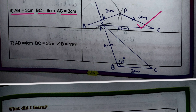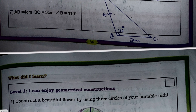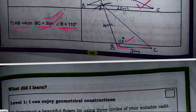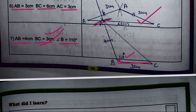Seventh example: AB = 4 cm, BC = 3 cm, angle B = 110°. First, draw line segment BC = 3 cm. Taking B as center, construct an angle of 110°. Then, taking B as the point, mark AB = 4 cm by cutting an arc. Join to get the triangle — it is also possible to construct this triangle.